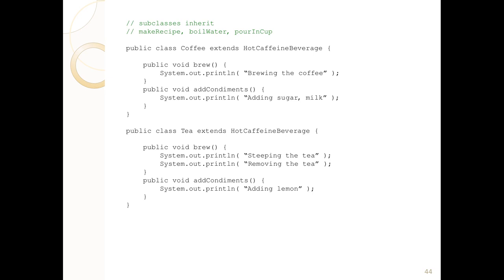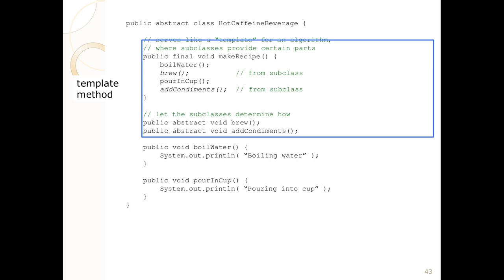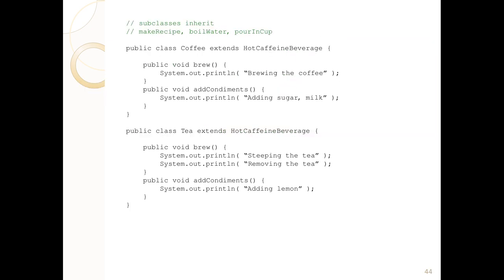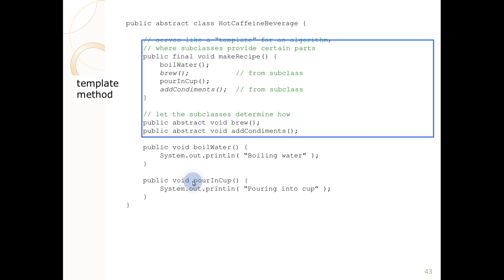We now have a general algorithm and then we have specialized implementations that extend the general algorithm through points of extension. This is basically called the template method. The template method allows you to insert things into it.